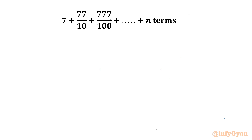Welcome back to Infigyan my dear friends. In today's video we are having one very interesting question from sequence and series. We have to find the sum of the series 7 plus 77 over 10 plus 777 over 100 plus 7777 over 1000 and so on up to n terms.